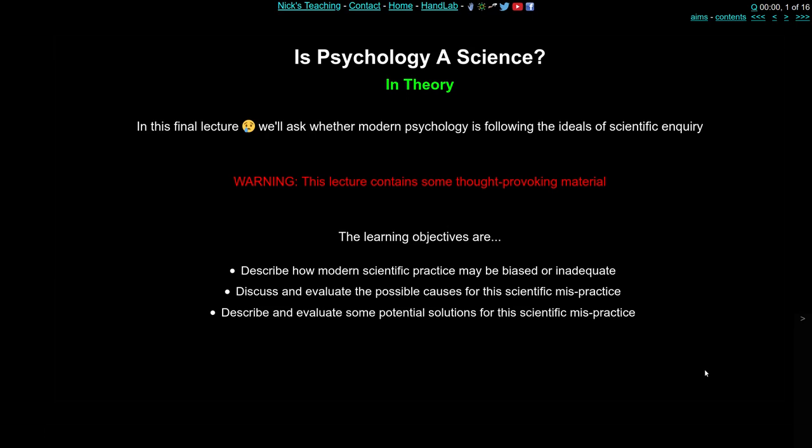A bit of a warning: some of the material in this lecture is quite thought-provoking and quite worrying. The learning objectives are to describe how modern scientific practice may be biased or inadequate particularly in psychology, to discuss and evaluate the possible causes for this scientific mispractice, and to describe and evaluate some potential solutions for how we might improve science in the future.